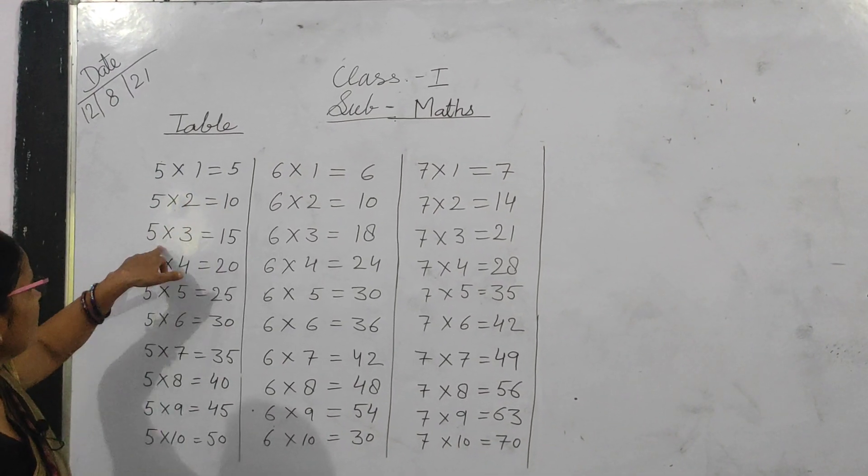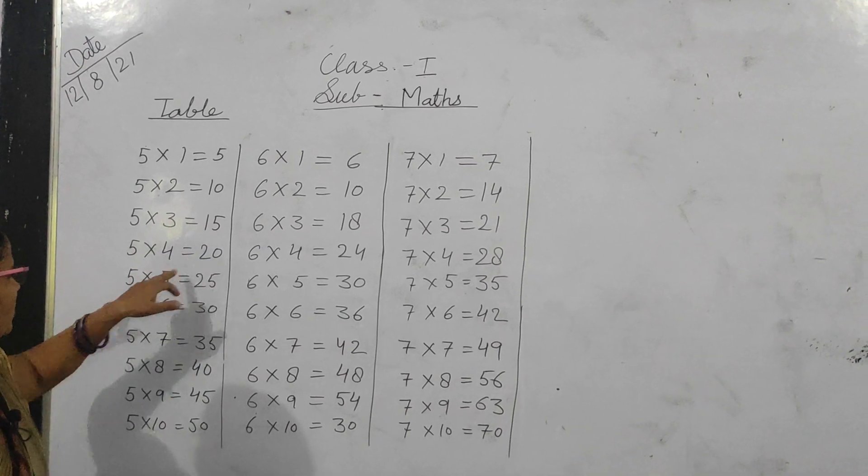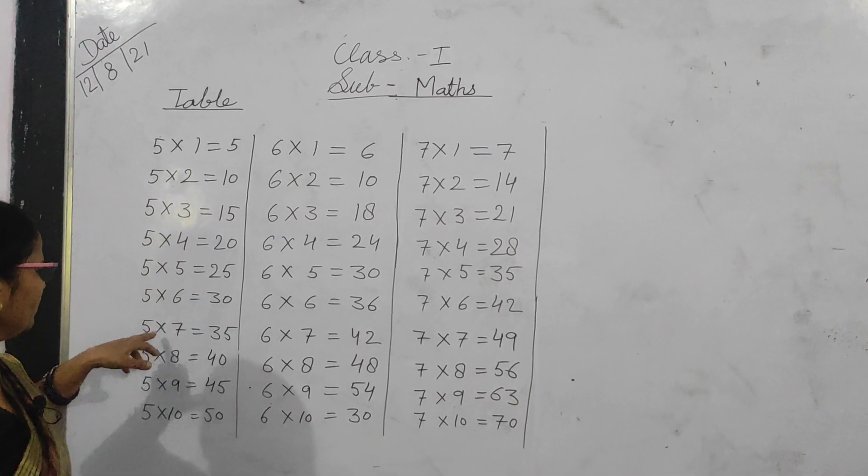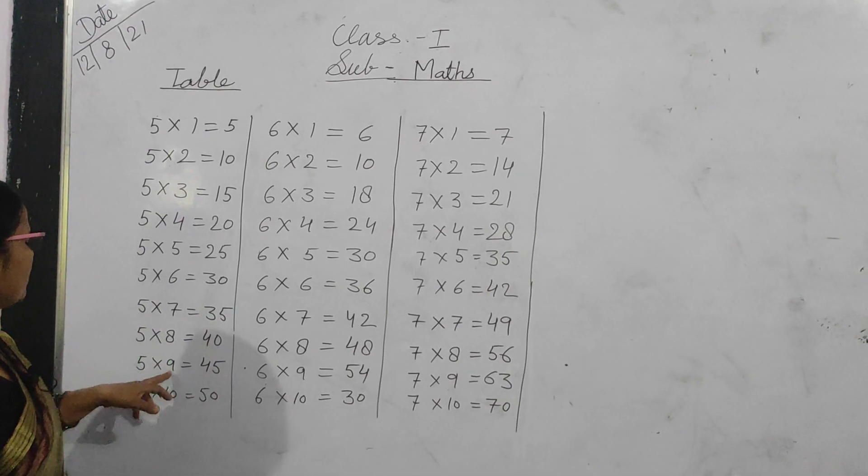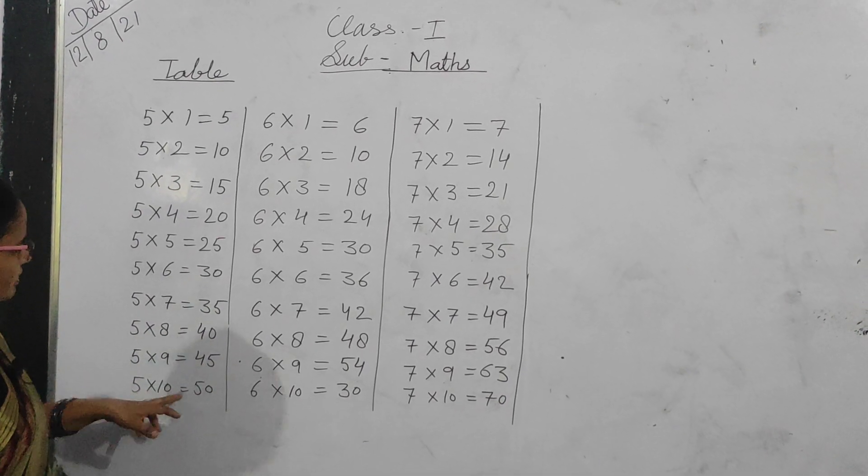5×10, 5×7, 5×5, 5×8, 5×9. We're going through each multiplication in the five times table.